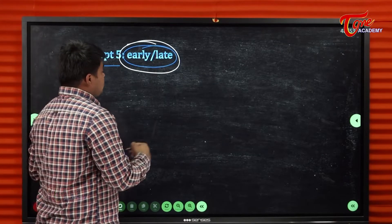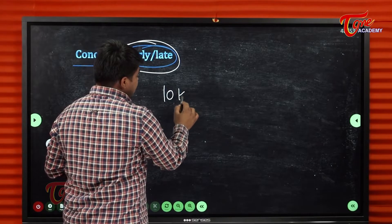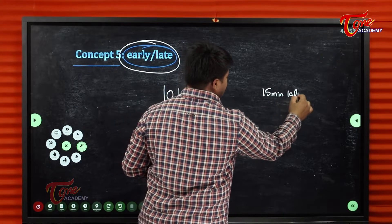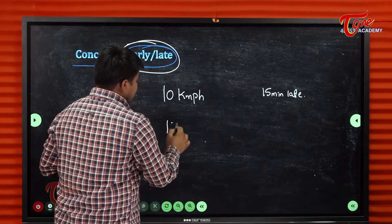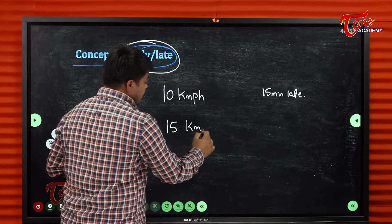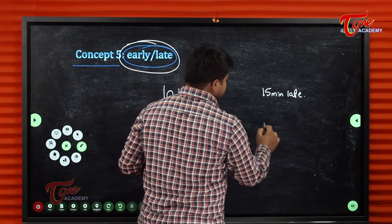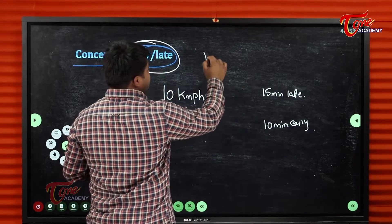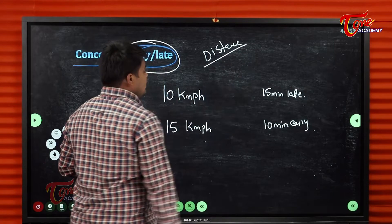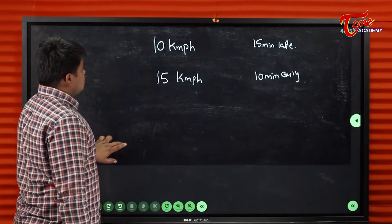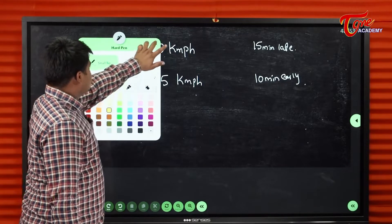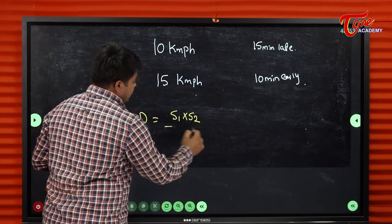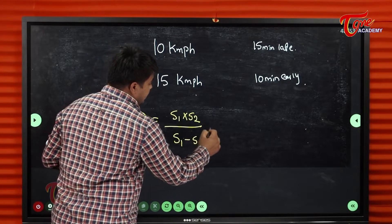First example: a person moving with a speed of 10 kilometers per hour reaches the destination 50 minutes late. If he increases the speed to 15 kilometers per hour, then he reaches the destination 10 minutes early. Find the distance. The formula is: Distance = S1 × S2 / (S1 − S2) × time in hours.